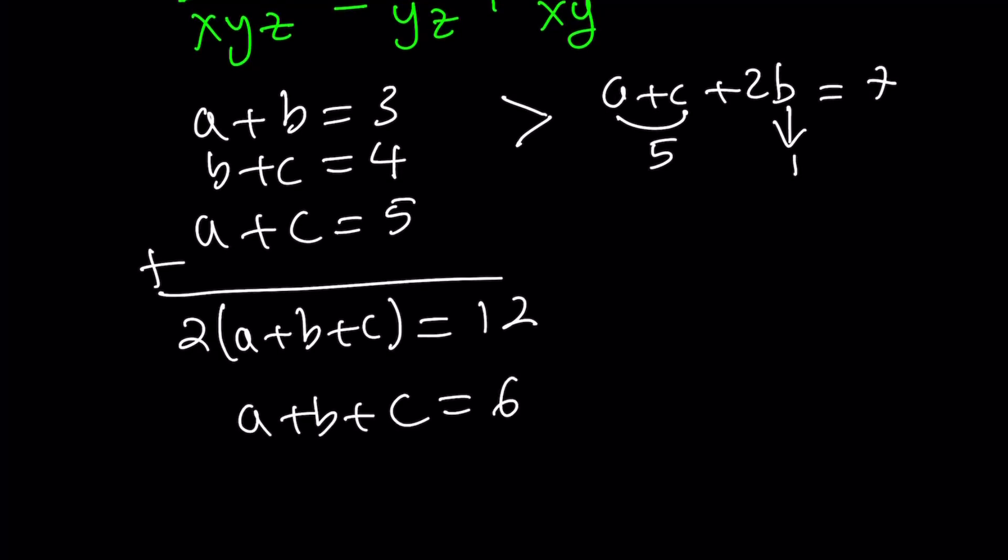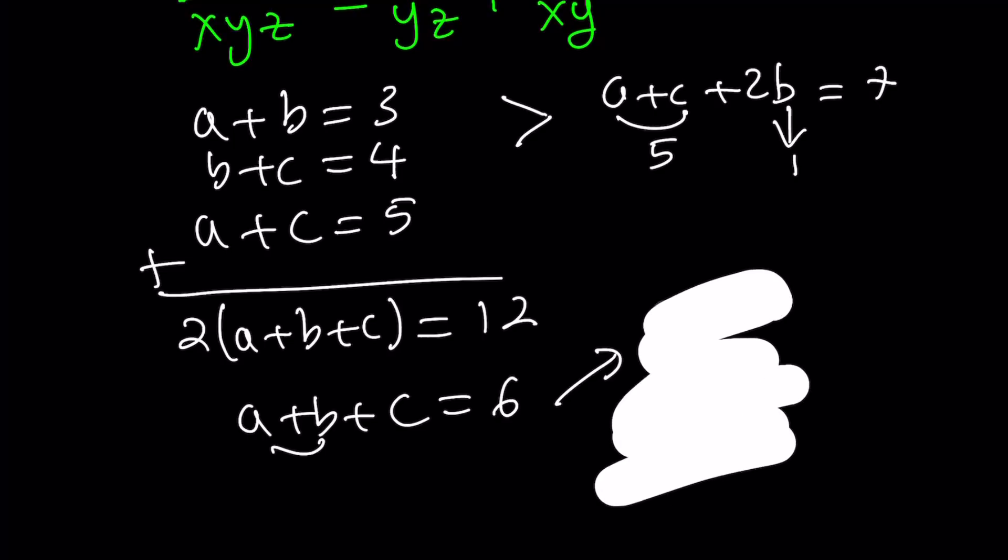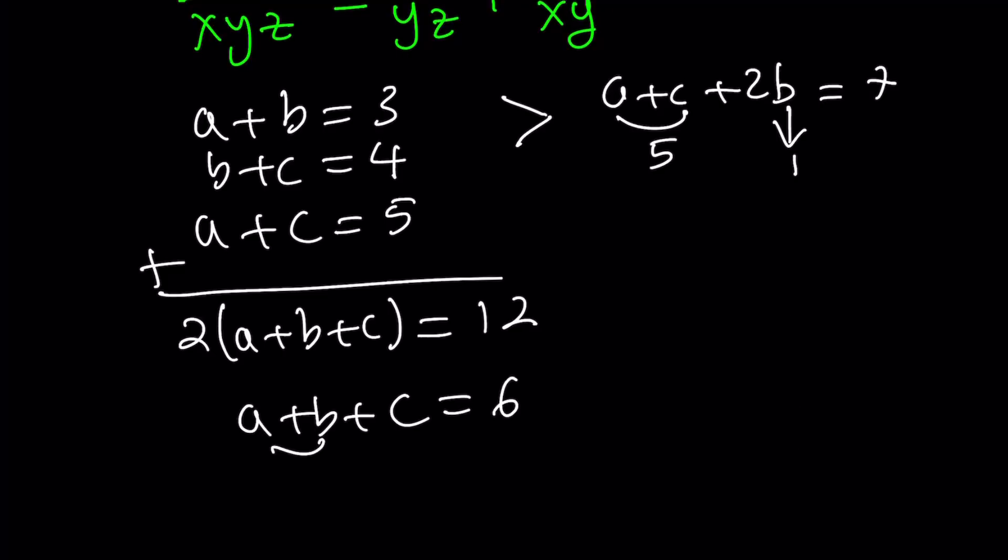But I'm going to use a different approach, which is my second method for this part. You can just add all the equations. That's going to give you 2 times the quantity A plus B plus C equals 12. From here, we get A plus B plus C is equal to 6. Now, I know there's some, and I know that A plus B is equal to 3. So from here, we can pretty much find everything, right? So A becomes 3, B becomes 2, and C becomes 1. Because think about it. A plus B is equal to 3. So 3 plus C is equal to 6.